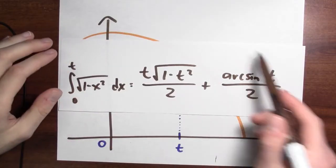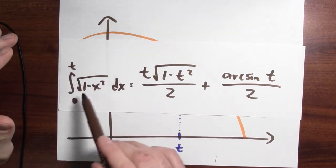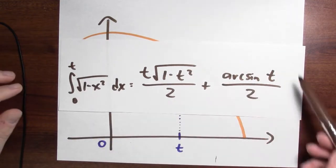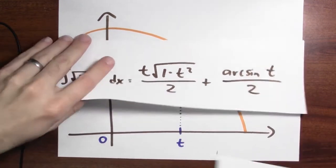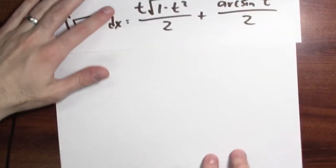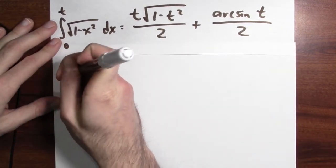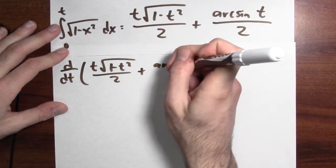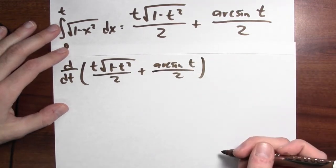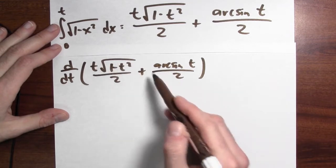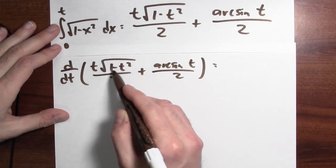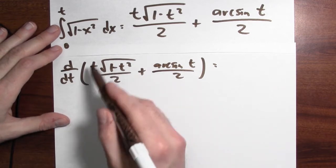We can work this out in a couple different ways. One way just involves differentiating. I'm going to differentiate this side and get, I hope, the square root of 1 minus t squared. That'll be a proof that an anti-derivative of the square root of 1 minus x squared is this expression, with t's replaced with x's. So let's try to really pull that off. I'm trying to differentiate the whole thing: t times the square root of 1 minus t squared over 2, plus the arc sine of t over 2. Differentiating a sum, I just differentiate each part. The first term is a product, so I'll use the product rule.